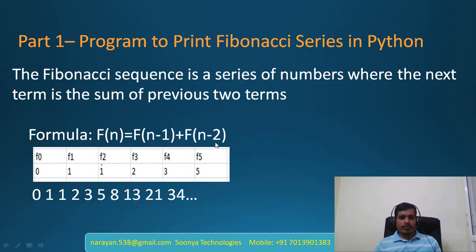For example, if you want to calculate Fibonacci sequence for f(5), then f(5) = f(4) + f(3). Here, f(3) is equal to 2 and f(4) is equal to 3. 2 plus 3 and we will get 5. This is the Fibonacci sequence.